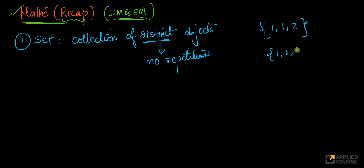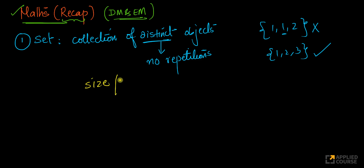On the other hand, this is a set of three numbers. You cannot have an item repeating itself. There is a concept called multi-sets where items can repeat, but in the general definition of a set, items cannot repeat. Then there is the term called size or cardinality. The size of a set or cardinality of the set is the number of elements that are there.